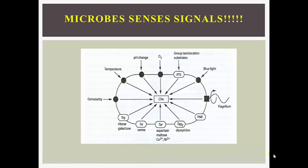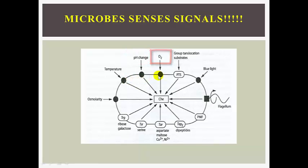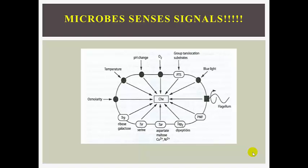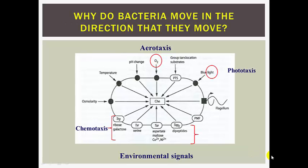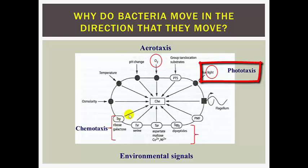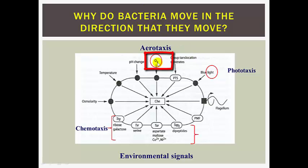In the previous lecture, we learned that microbes sense environmental signals, including osmolarity, temperature, pH, oxygen, or nutrients such as glucose. Microorganisms possess sensor kinases in their cytoplasmic membranes that allow them to sense these signals, which direct their movement. For example, microbes will move towards a nutrient and will move away from harmful substances.